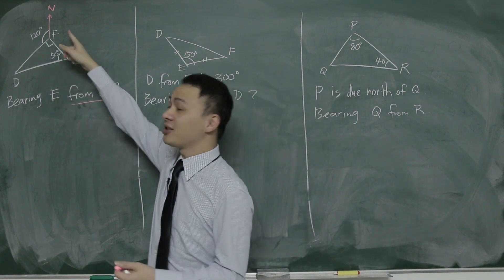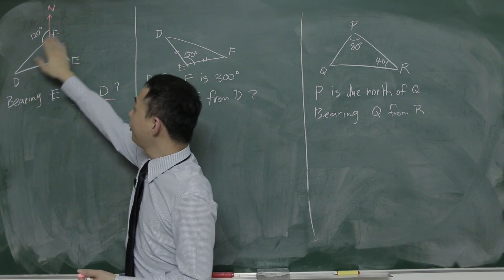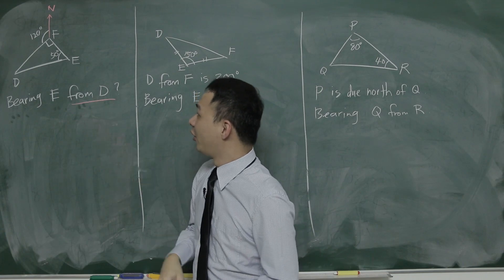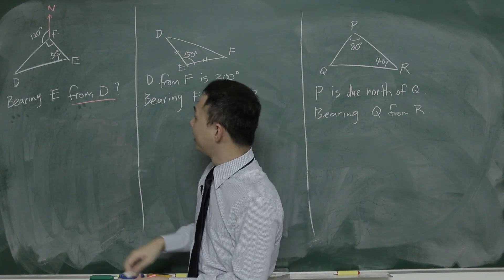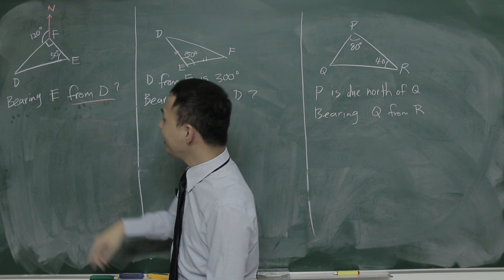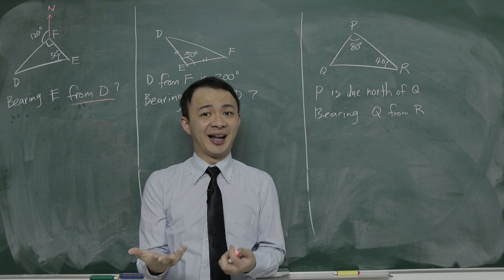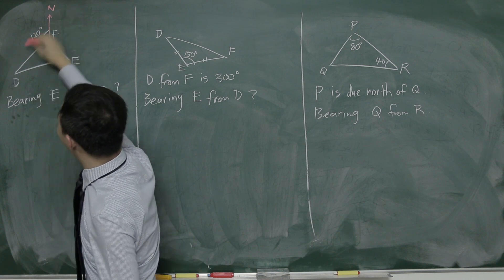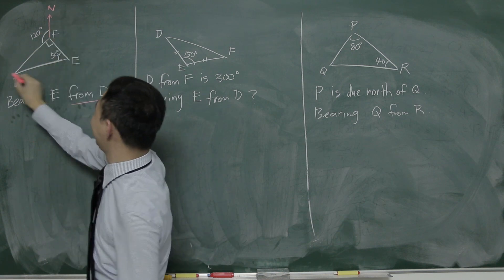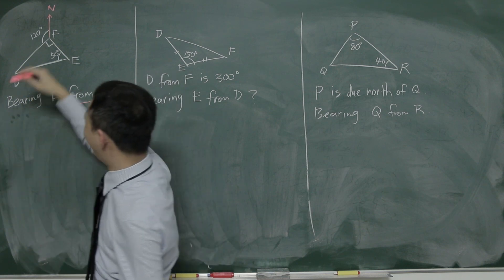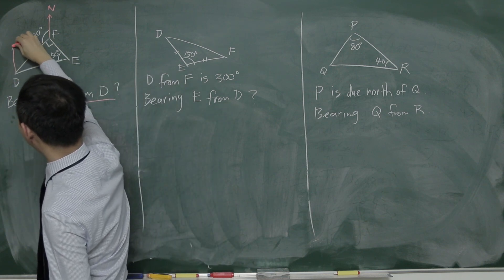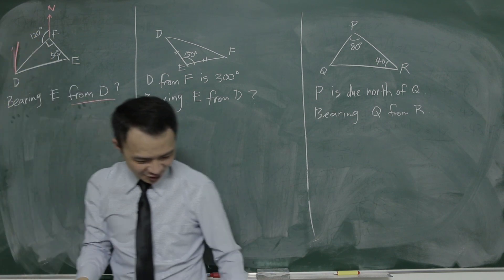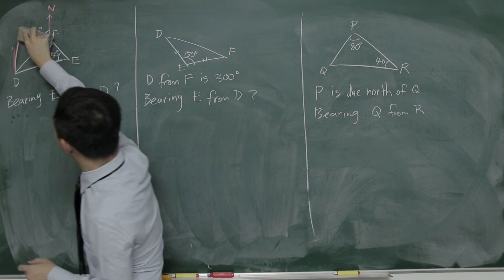The first example is quite easy because the north is given. They give you this diagram and ask you to find the bearing E from D. From D, that means the angle must be at D here. But at D, I don't have a north line, so I need to draw it myself — exactly parallel to the given north line. You cannot draw north in whatever direction you like; it must be parallel. Let me draw a nice straight parallel line.